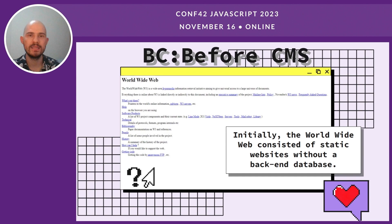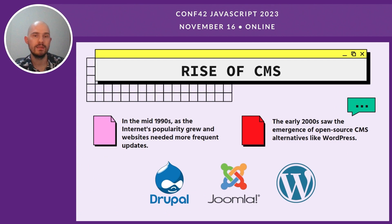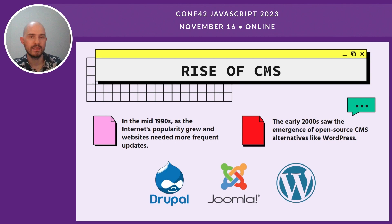Let's talk a little bit about the beginnings of the web. The World Wide Web started with static sites that provide content without database queries. These sites consumed minimal computing resources, resulting in fast loading times. This speed was due to the absence of a complex backend. It was in the middle of the 1990s. As internet popularity rose and websites started to require more frequent updates, we saw the first CMS products.